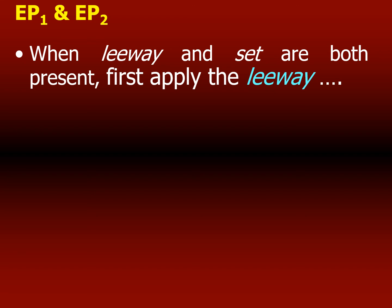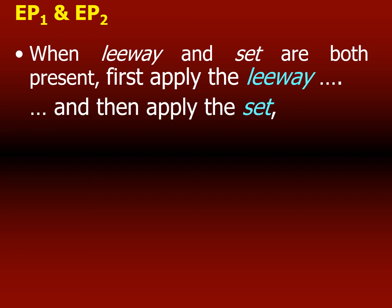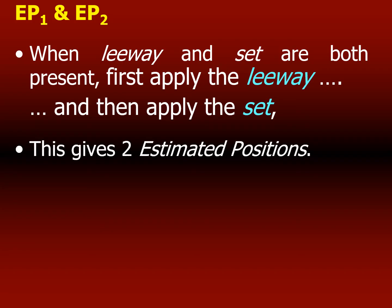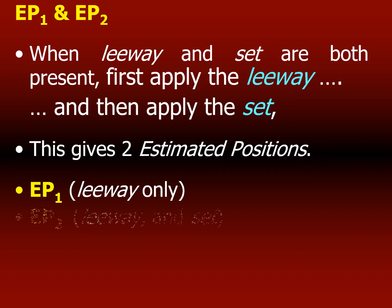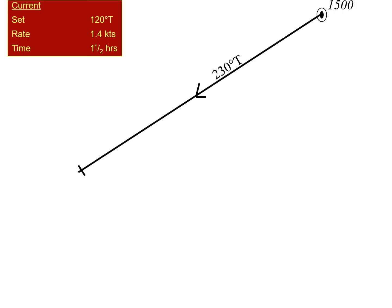Now let's look at estimated position one (EP1) and estimated position two (EP2) — these are the positions when both leeway and the current's set are present. When you have to take into account the effect of both wind and current, always allow for leeway first, then the current. EP1 is the result of the effect of wind, and EP2 is the position of the vessel due to the combined effect of wind and current.